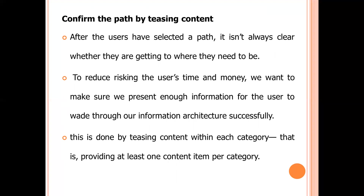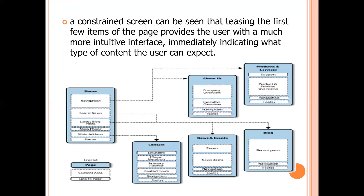Confirm the path by testing content. After users have selected a path, it is not always clear whether they are getting to where they need to be. To reduce the risk of wasting the user's time and money, we want to present enough information for the user to navigate our information architecture successfully. This is done by teasing content within each category — providing at least one content item per category. A constrained screen that teases the first few items provides the user with a much more intuitive interface, immediately indicating what type of content they can expect.